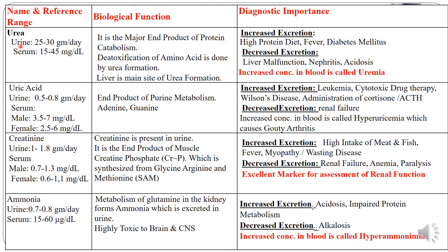Urea is a normal constituent of urine. It is excreted around 25 to 30 grams per day. And in blood — that is in serum — it is present in a concentration of 15 to 45 milligrams per dl. Urea is a major end product of protein catabolism. Its major biological function is detoxification of ammonia, which is done by the formation of urea. The synthesis of urea occurs in the liver. So just don't think that urea is a waste product — it actually has a big role in detoxifying ammonia.